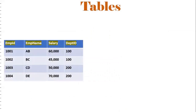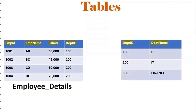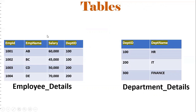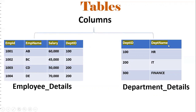Now we'll see some examples of tables. This is the Employee Details table, with columns: Employee ID, Employee Name, Salary, and Department ID — four columns and four rows of records. And this is the Department Details table, with columns Department ID and Department Name — two columns and three records.